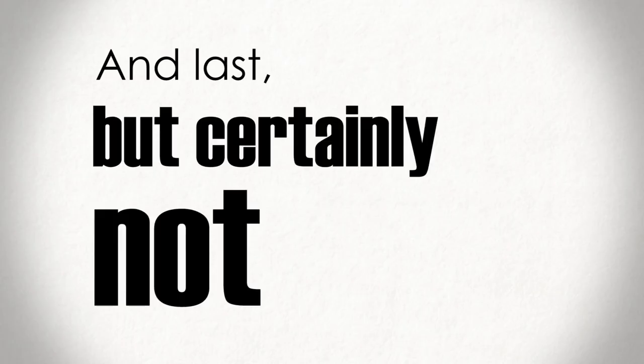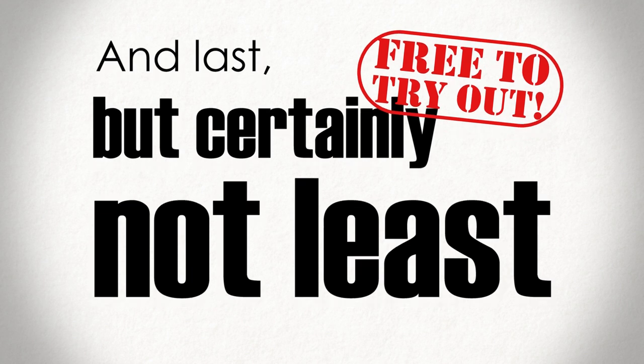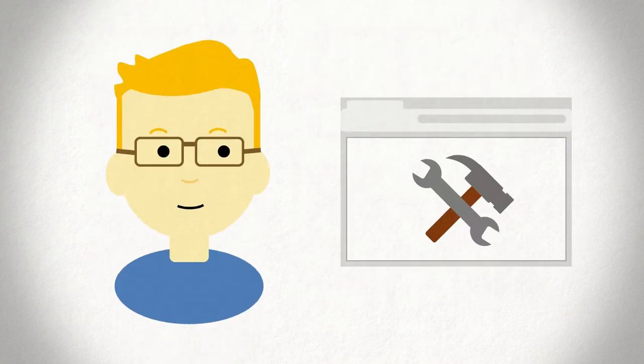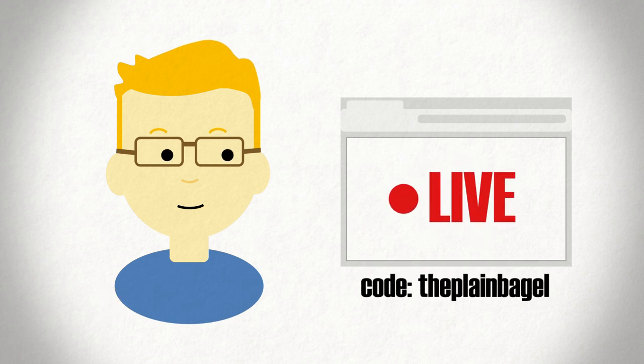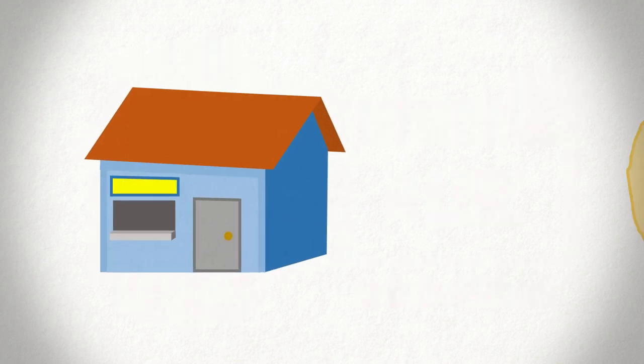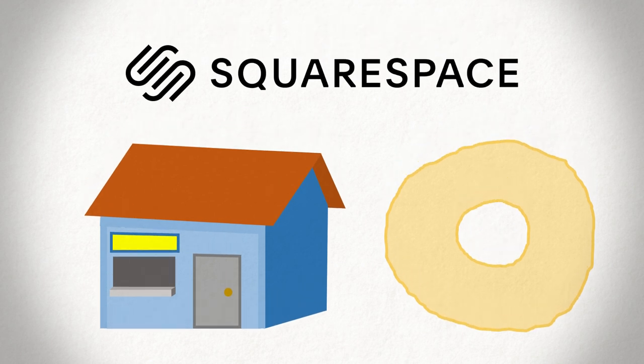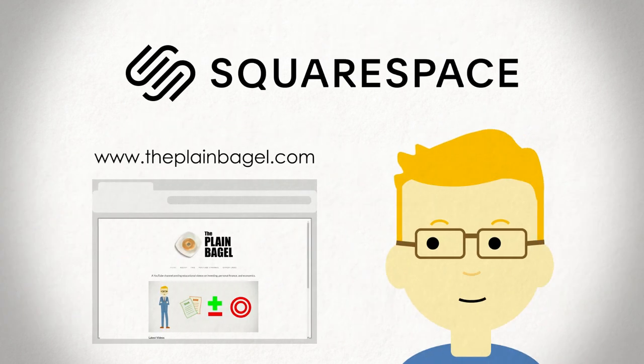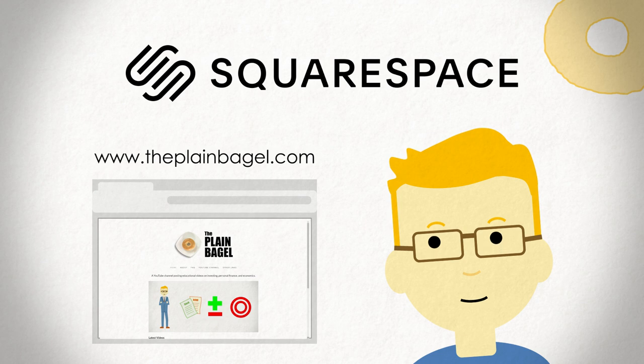And last, but certainly not least, they're free to try out. As in, you can build your whole website and try their service before you pay a cent. And when you do decide to take your creation live, using coupon code THEPLAINBAGEL will save you 10% off your first purchase of a website or domain. So whether you're building a business or just something for fun, check out Squarespace. Oh, and my own website, if you, you know, want an example or something. Or if you want to learn more about the channel, it's up to you. That'd be cool. Anyway, yeah. Bye.